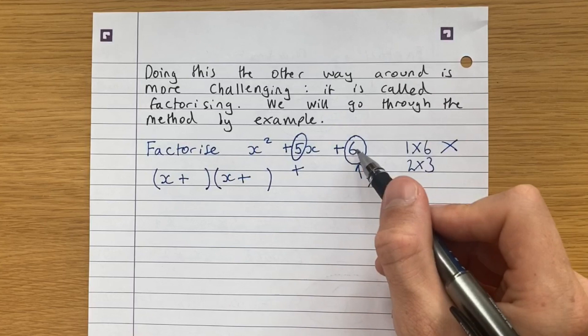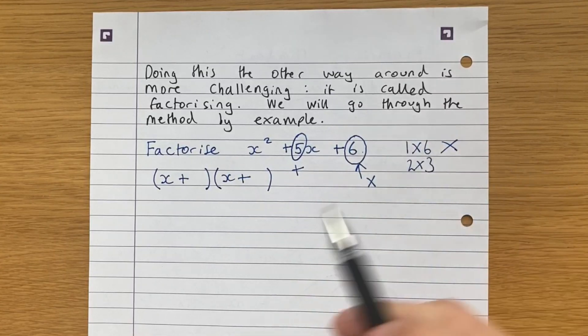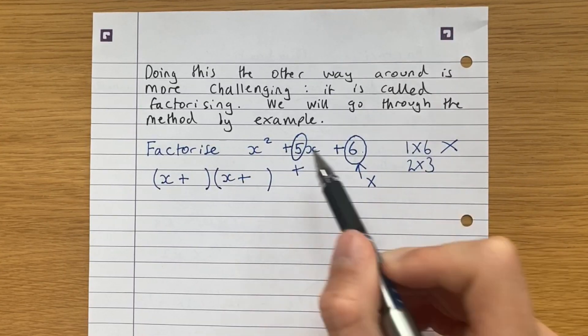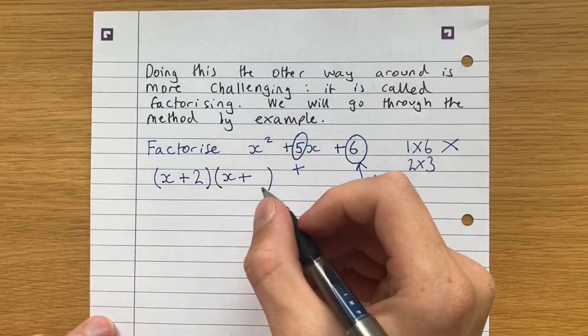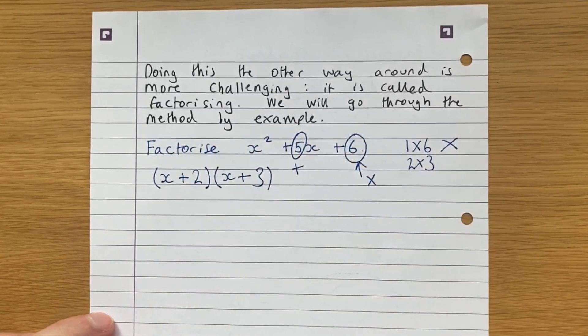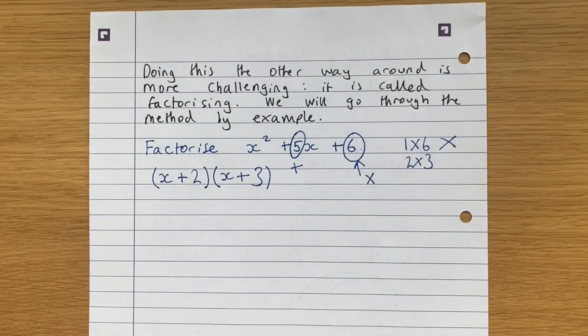However, 2 times 3 is also 6. So that ticks that box. And 2 plus 3 is equal to 5. So we write them in. 2 and 3. And if we want to check our work here,